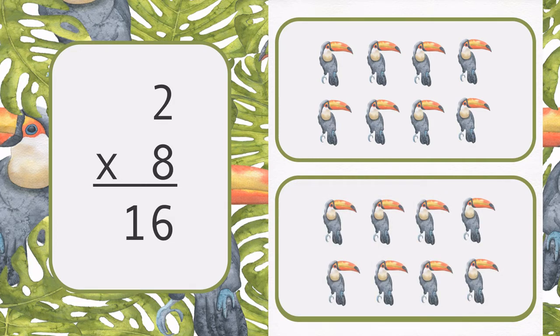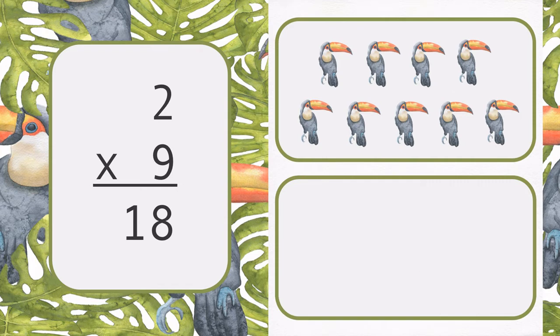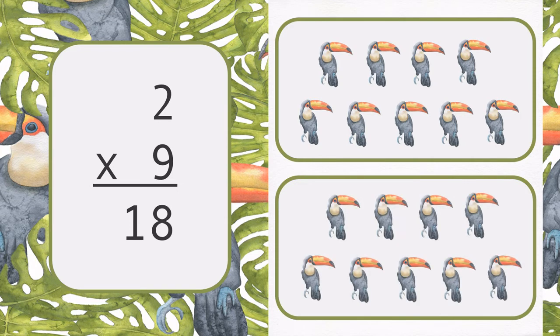There are two groups of 8. 2 times 8 is 16. There are two groups of 9. 2 times 9 is 18.